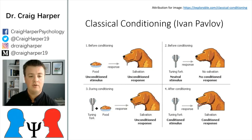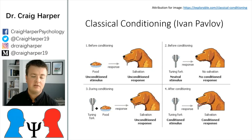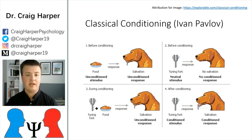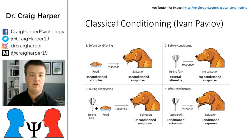If you take a random dog and ring a tuning fork in its presence, you typically see no response between the dog and the tuning fork. However, when you pair the tuning fork with food, because the food is present the dog salivates — and because these two things are being paired, the dog begins to associate food with the sound of the tuning fork. After a series of exposures to this association, just hearing the tuning fork causes the dog to salivate. This becomes a conditioned response to the conditioned stimulus of the tuning fork — pairing an unconditioned stimulus with one you want conditioned to produce a conditioned response.